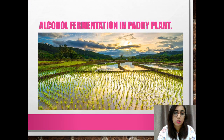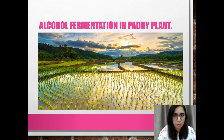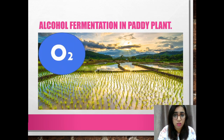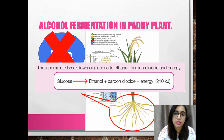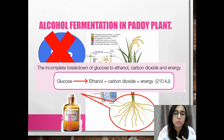Some plants like the paddy plant can carry out temporary alcohol fermentation in anaerobic conditions. When paddy plants are heavily flooded for a long time, the oxygen supply is cut off. In this anaerobic environment, the root cells of the paddy plant undergo alcohol fermentation — the chemical equation is the same as fermentation in yeast. Although ethanol is toxic to most plants, the root cells of paddy plants have a high tolerance towards ethanol compared to other plants.